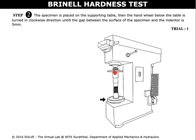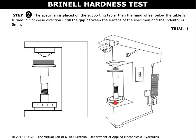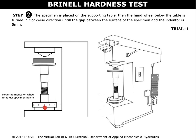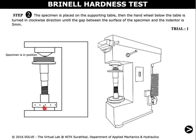The specimen is placed in the supporting table. Now click on the hand wheel and move the mouse pointer in the clockwise direction to position the specimen. There should be a 5 mm gap between the surface of the specimen and the indentor.